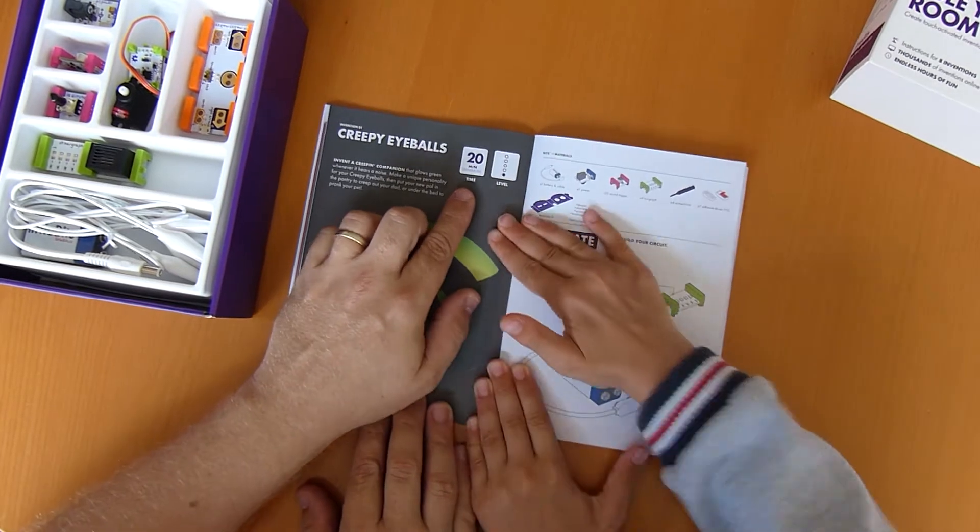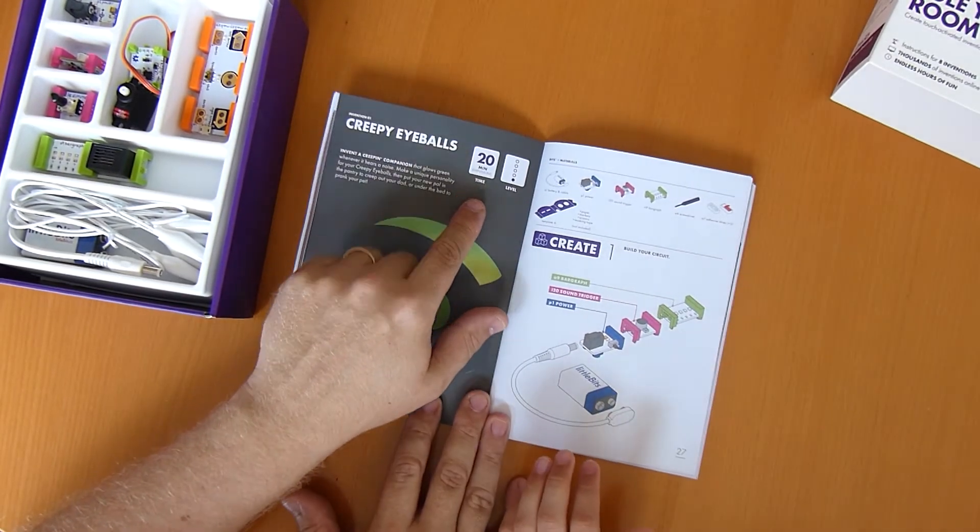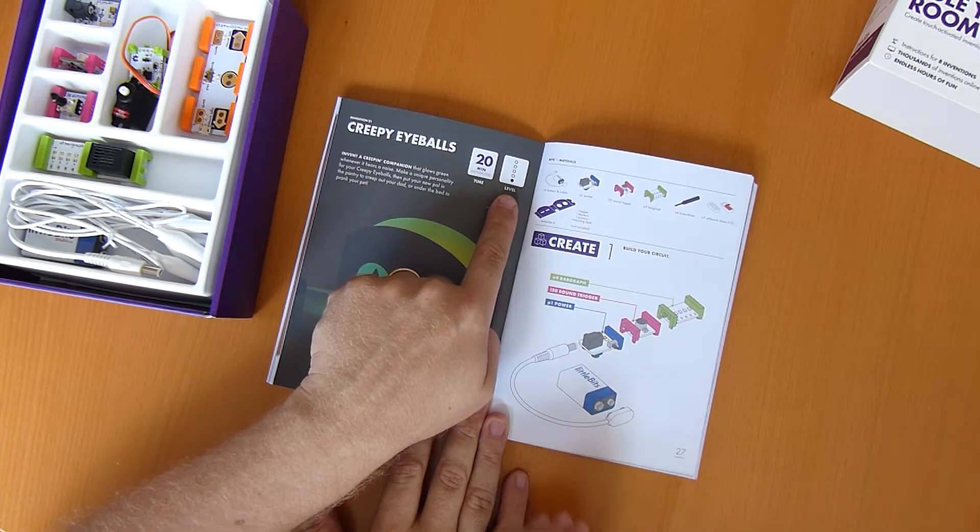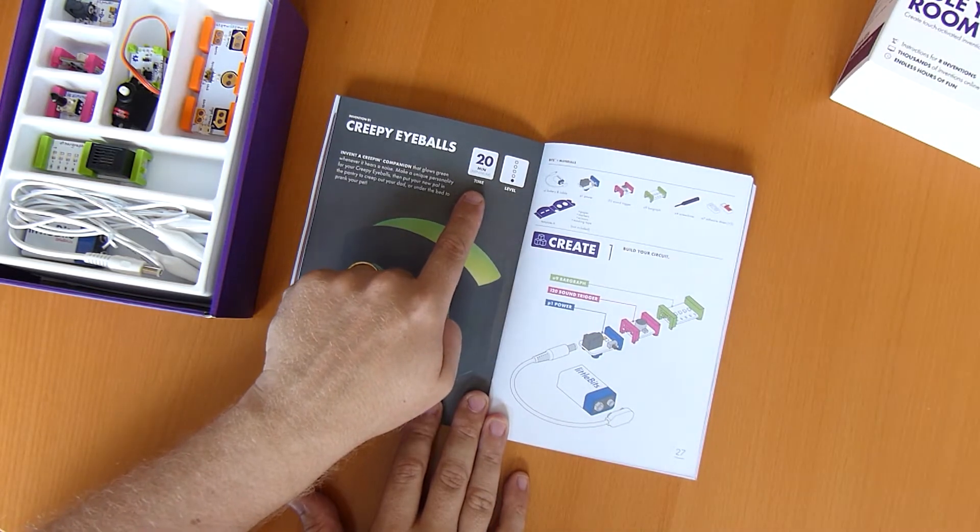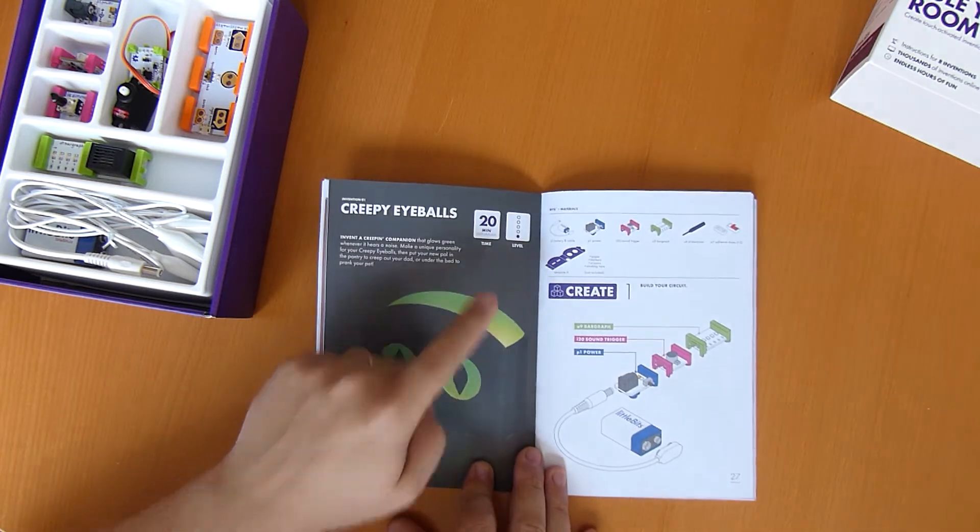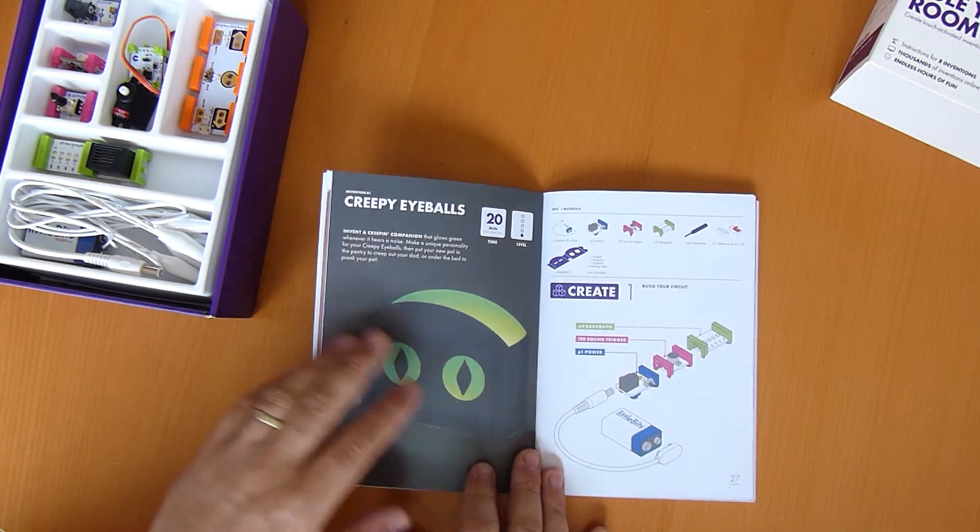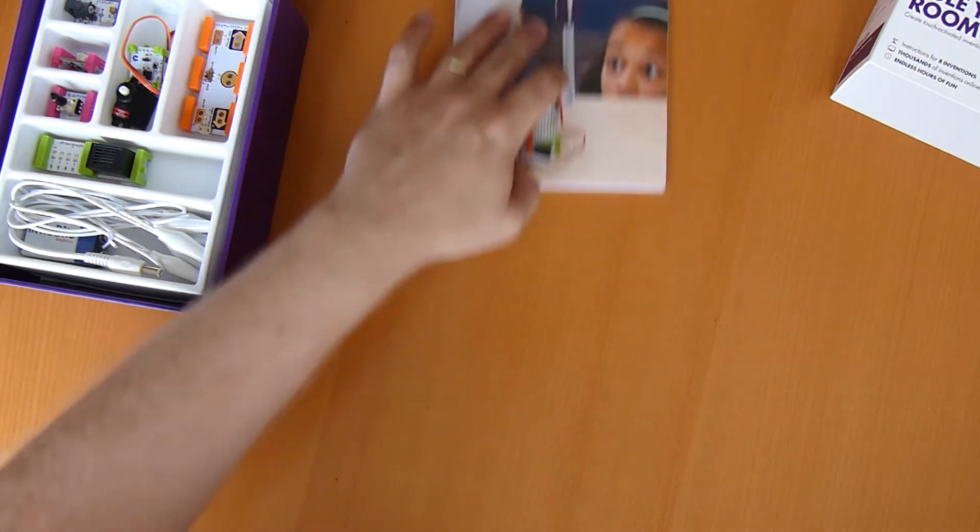You can see that each idea has how difficult it is. This is a one difficulty out of five, and how long it'll take to do for that activity. It's a 20 minute activity and shows you all the bits that you need. That's probably what we'll have a go at. Let's have a look at the rest of the box.